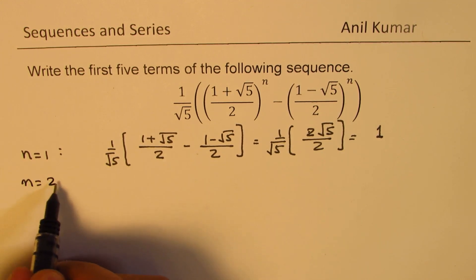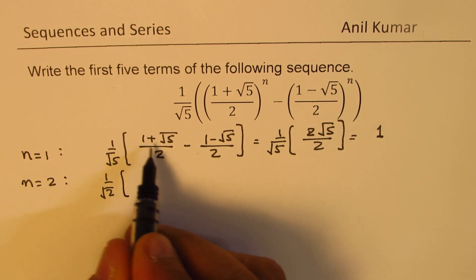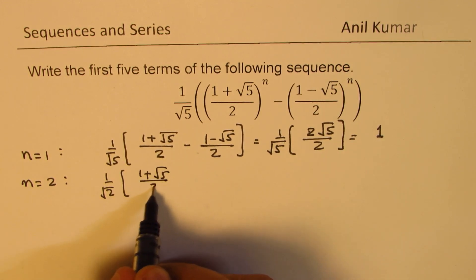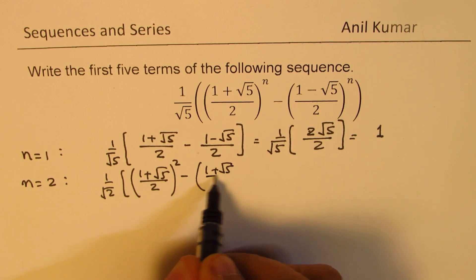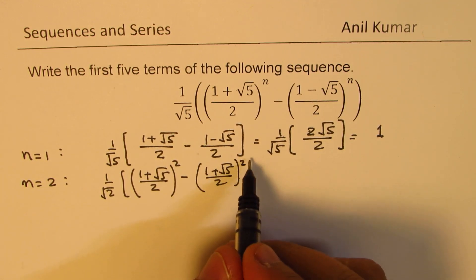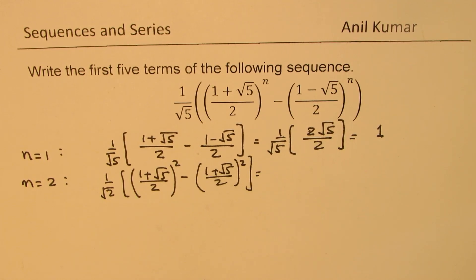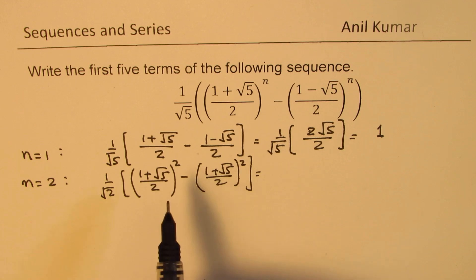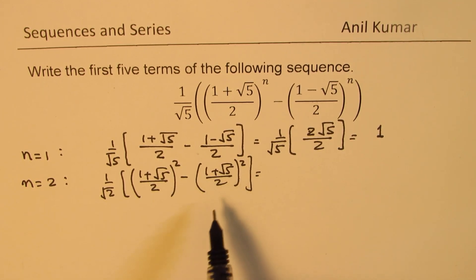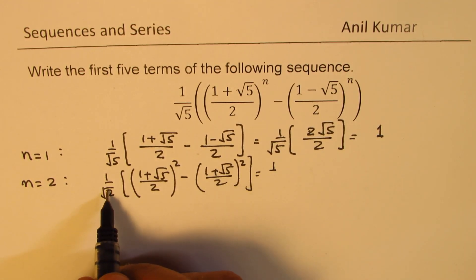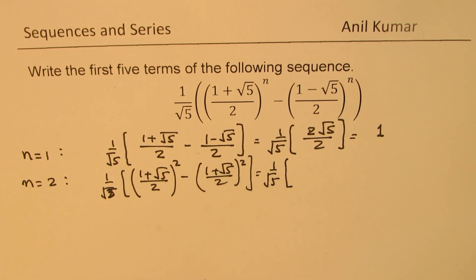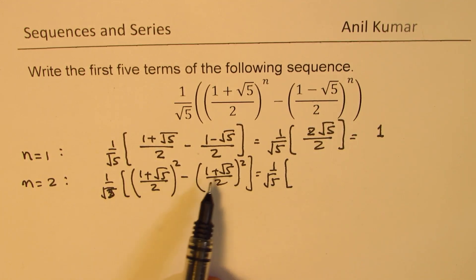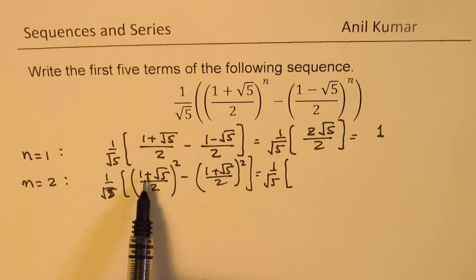If we substitute n equals 2, we get 1 over square root of 5, times the bracket: (1 plus square root of 5) over 2, whole squared, minus (1 minus square root of 5) over 2, whole squared. Some of you will recognize this as a difference of squares — a squared minus b squared — or you could expand and figure out the answer.